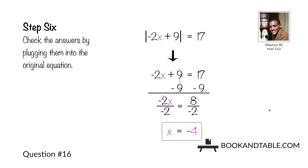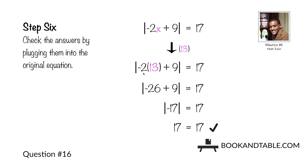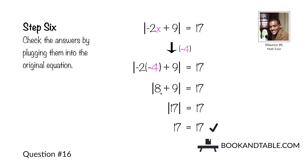Check both answers by plugging them into the original equation. For x equals 13: negative 2 times 13 is negative 26, negative 26 plus 9 is negative 17, and the absolute value of negative 17 is positive 17 — so x equals 13 is correct. For x equals negative 4: negative 2 times negative 4 is 8, 8 plus 9 is 17, and the absolute value of 17 is 17 — confirming x is equal to negative 4 is a correct answer.